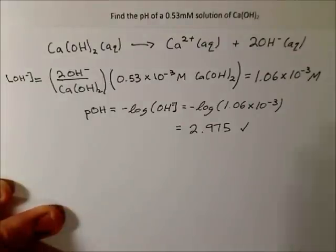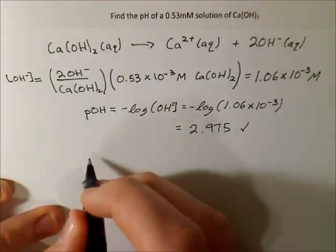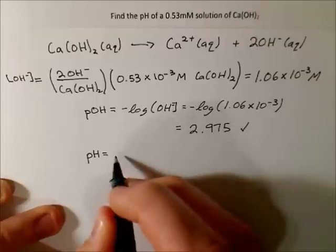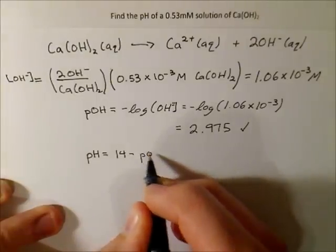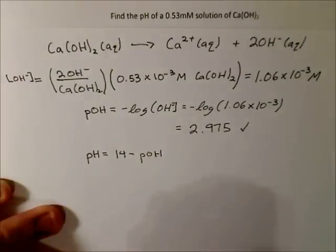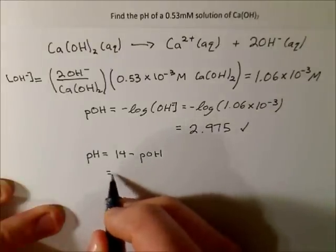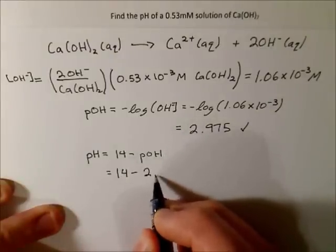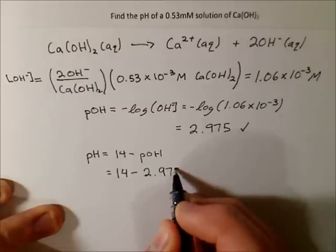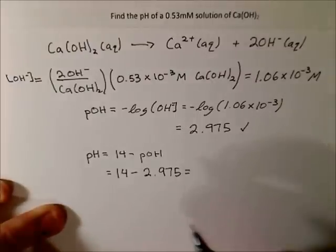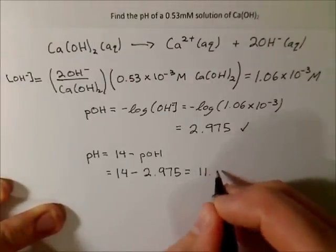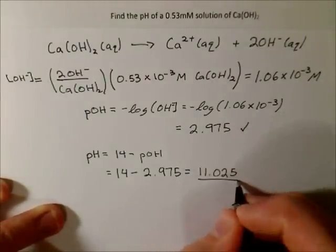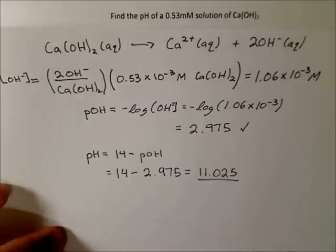So now we want to find the pH. So from the definition of pH, it's just 14 minus the pOH. So we take 14 minus, and we should get 11.025. And that's our pH of the strong base.